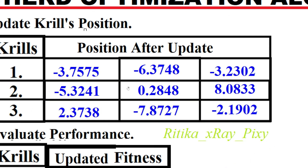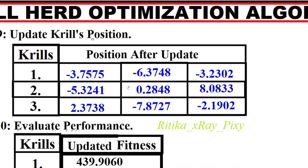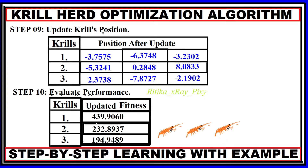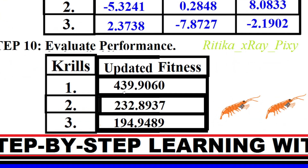We check the bounds: lower bound is -10, upper bound is 10, and all updated values are within bounds. Then, again using the cost function, we evaluate the performance and obtain new fitness values for the three krills.